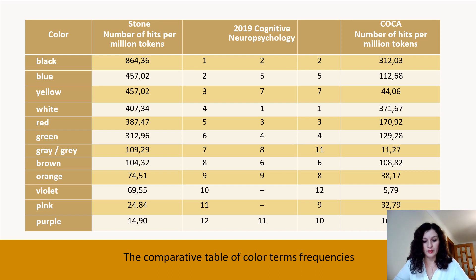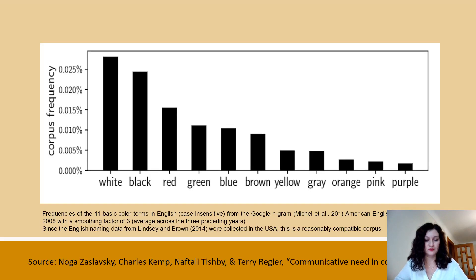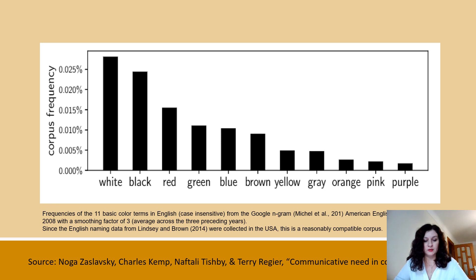It was interesting for us to compare the obtained results with the data presented by Noga Soslavsky and her colleagues, taken from the American English dataset as well as data from the Corpus of Contemporary American English (COCA). The actual sequence of color terms on the frequency list is distinctive. In the studied novel, the color term 'black' exhibits the highest frequency, whereas in the comparison corpus it surpasses 'white.' In Stone's novel, 'black' is fourth. 'Yellow' and 'blue' are second and third in frequency in 'Lust for Life,' but according to Soslavsky et al. and the COCA, they are fifth and seventh respectively.